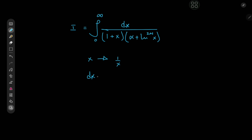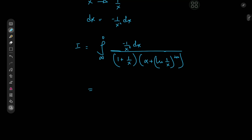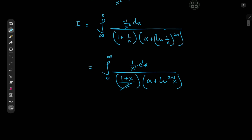Taking x to the 1/x realm takes dx to the negative 1/x² dx realm. By that token, we have i being the integral now from infinity to 0 of negative 1/x² dx divided by 1 plus 1/x, and we have alpha plus log(1/x) all to the 2n. We can get rid of the negative sign if we switch up the limits of integration. We get an integral from 0 to infinity with log(1/x) equal to negative log x, but it's being raised to 2n, so we get log to the 2n of x again — nice cancellation.